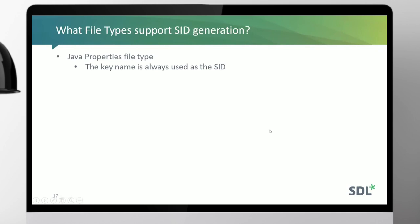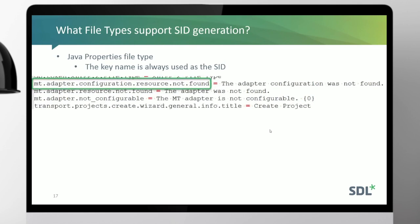The file types that support SID generation: the Java properties file type uses the key name — the thing on the left of the structure. It's very simple: key name on the left, which is the resource ID, then an equal sign, then the text. You can also have placeholders and other programmatically generated content. The key name is developer-named and will always stay the same even if the text changes, so we use this as that extra level of context.